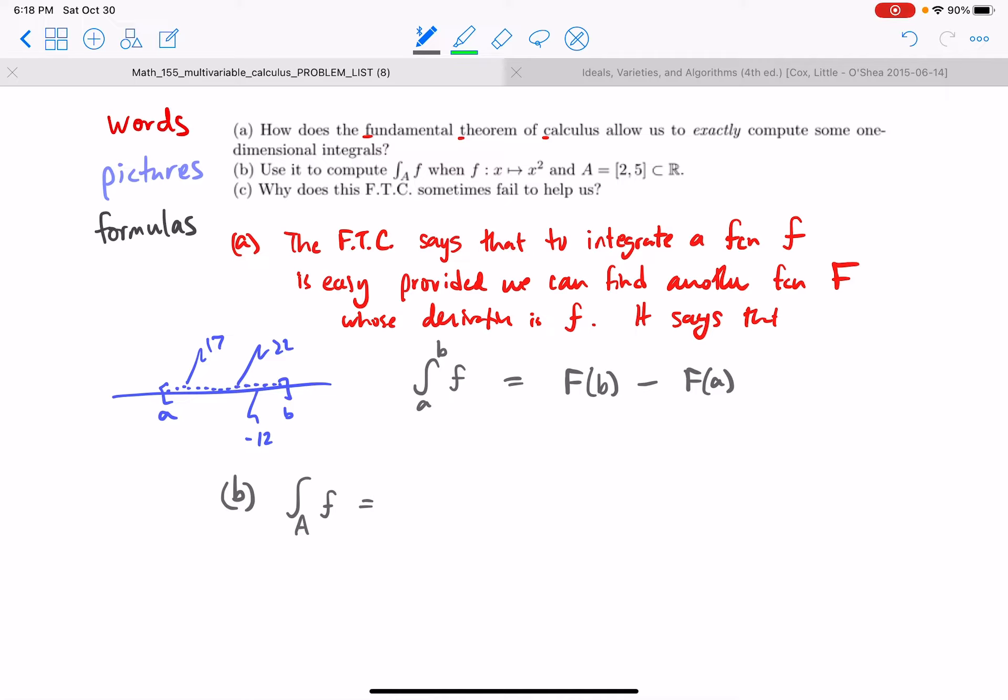Well, when the interval is 2 to 5 and f is x squared. In single variable calculus you might have written the 2 down here and the 5 up there. Of course it doesn't matter what you write, provided you understand what you're doing. But in single variable calculus, we just sort of know to do this.